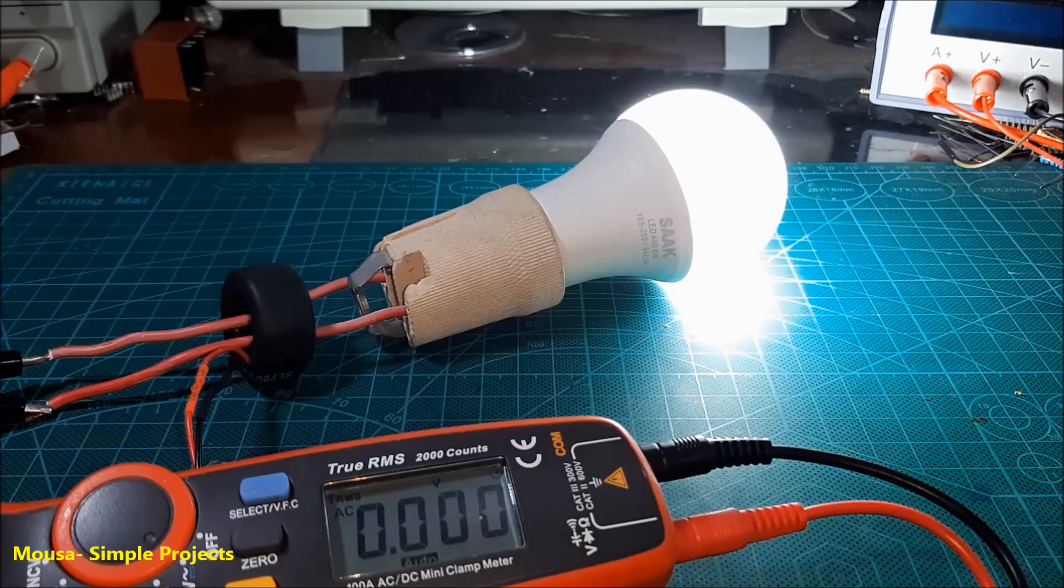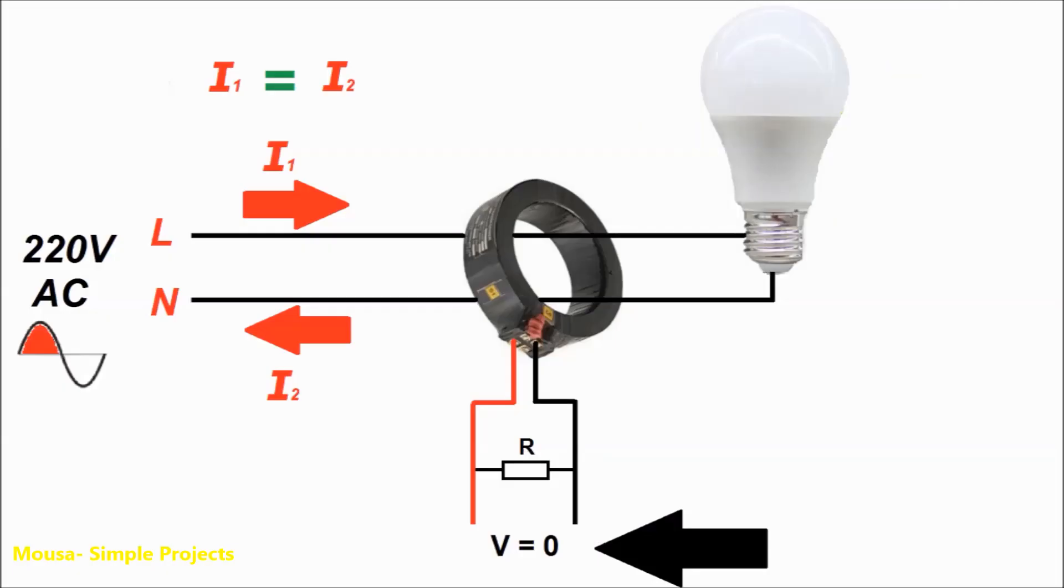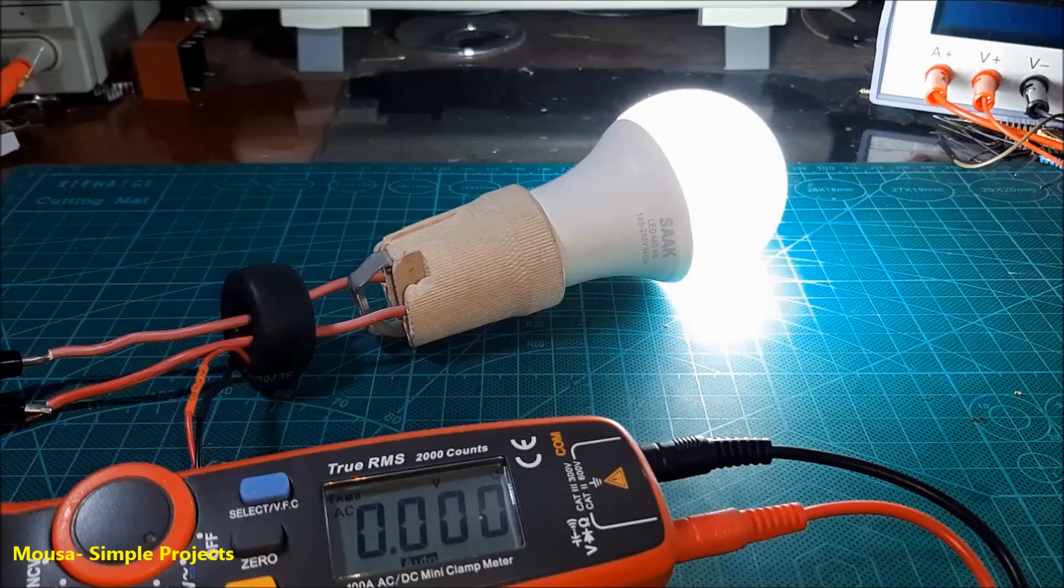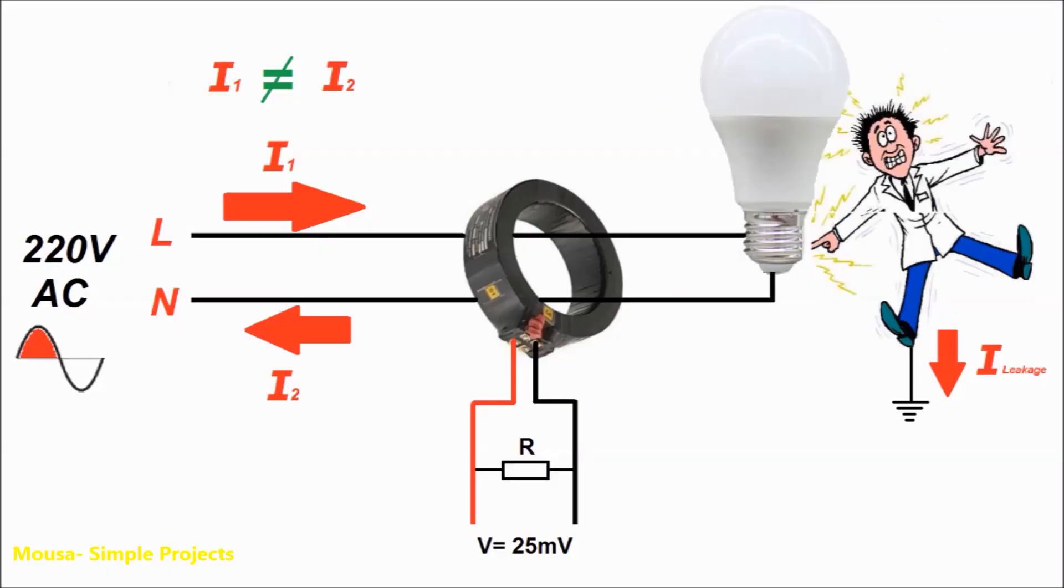But when somebody accidentally touches the live wire, the current through the live wire becomes slightly more than the current through the neutral wire. This unbalanced current produces a very small amount of voltage in the current transformer.